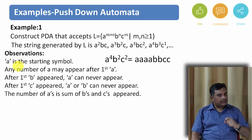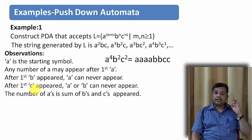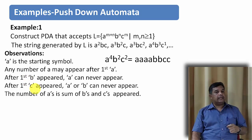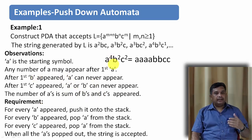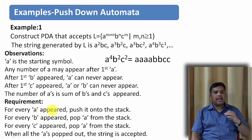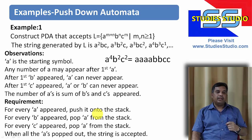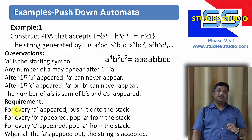Let us see the observations: a is the starting symbol, we can have any number of a's. After the first b appears, a can never appear again. After the first c appears, neither a nor b can appear. The number of a's must equal the sum of the number of b's and c's. The requirement is we need memory: whenever an a appears we push it onto the stack, and whenever b or c appears we pop an a from the stack. When all a's are popped, the string is accepted.